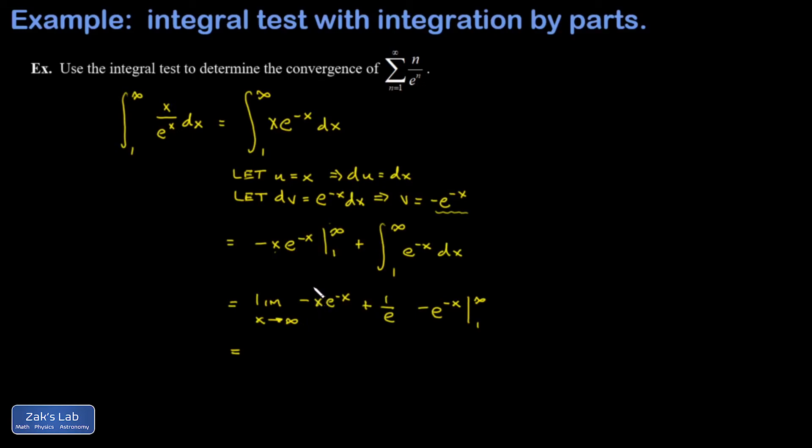But in the last piece over here I don't have anything ambiguous going on. E to the negative infinity is one over e to the infinity, that's zero, so the upper limit is going to vanish.